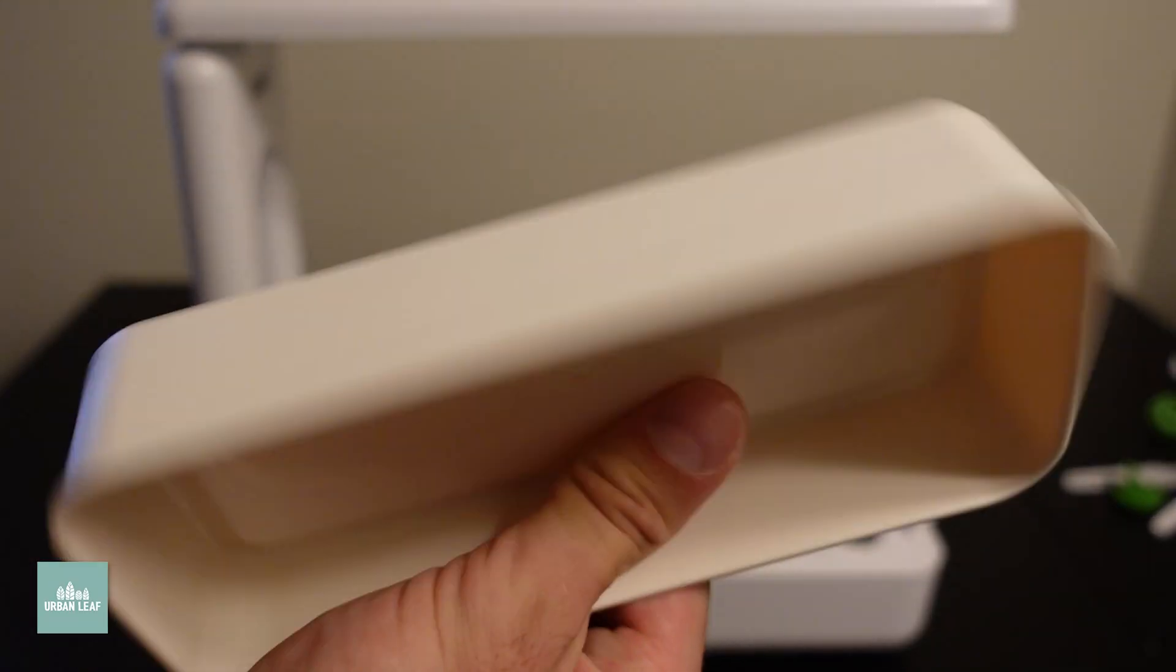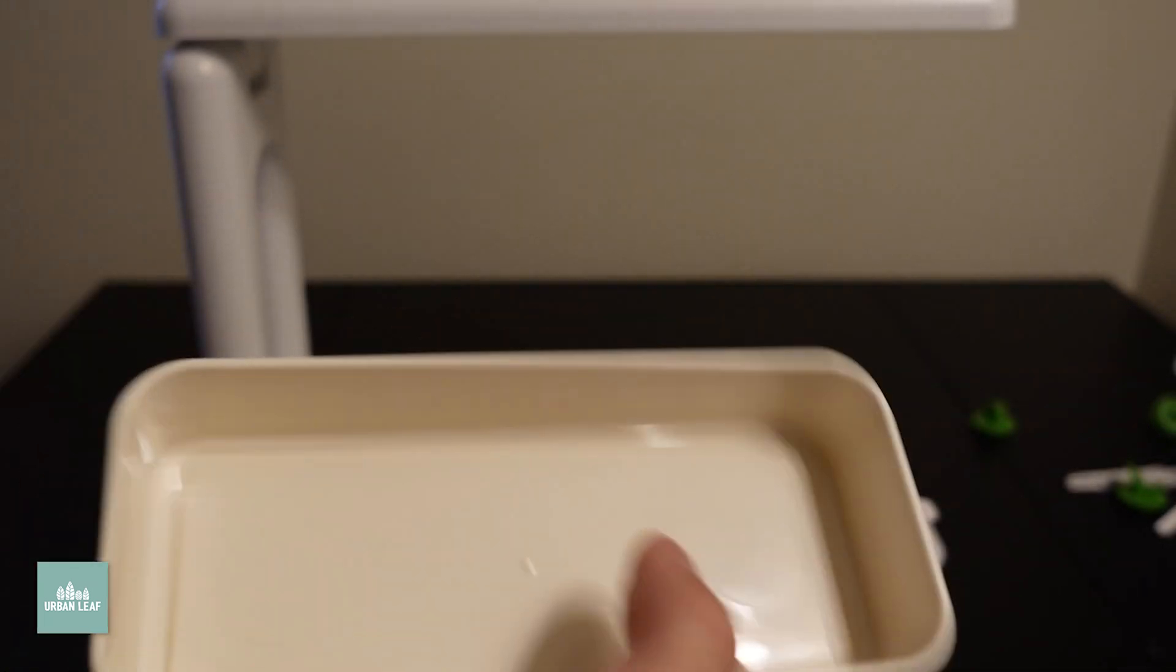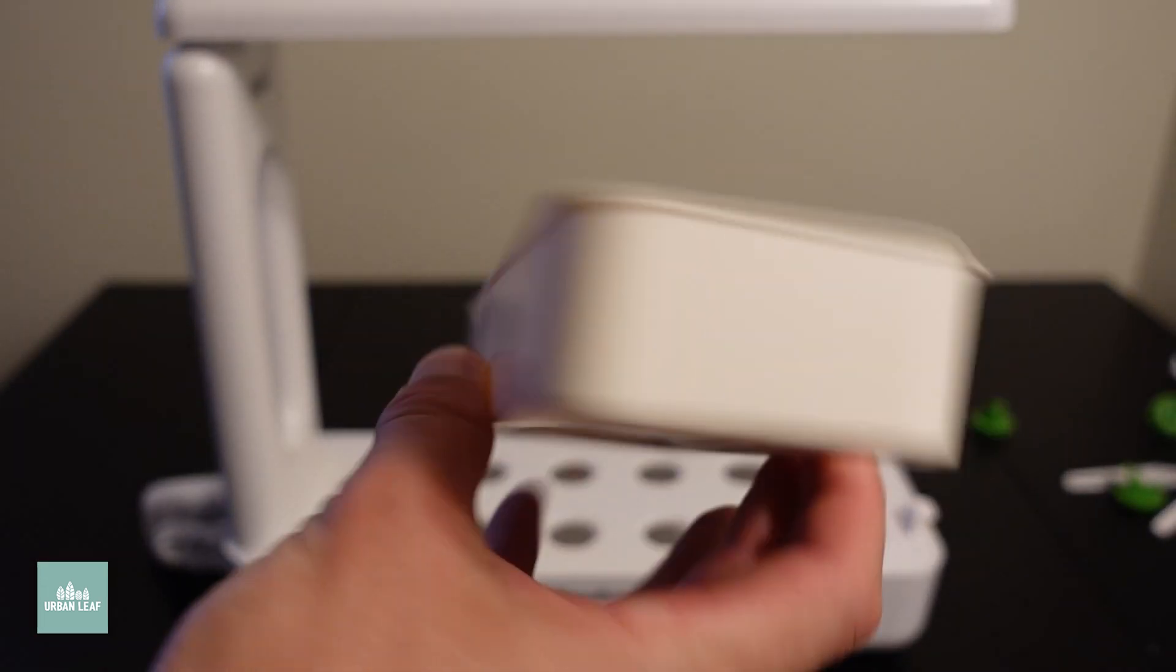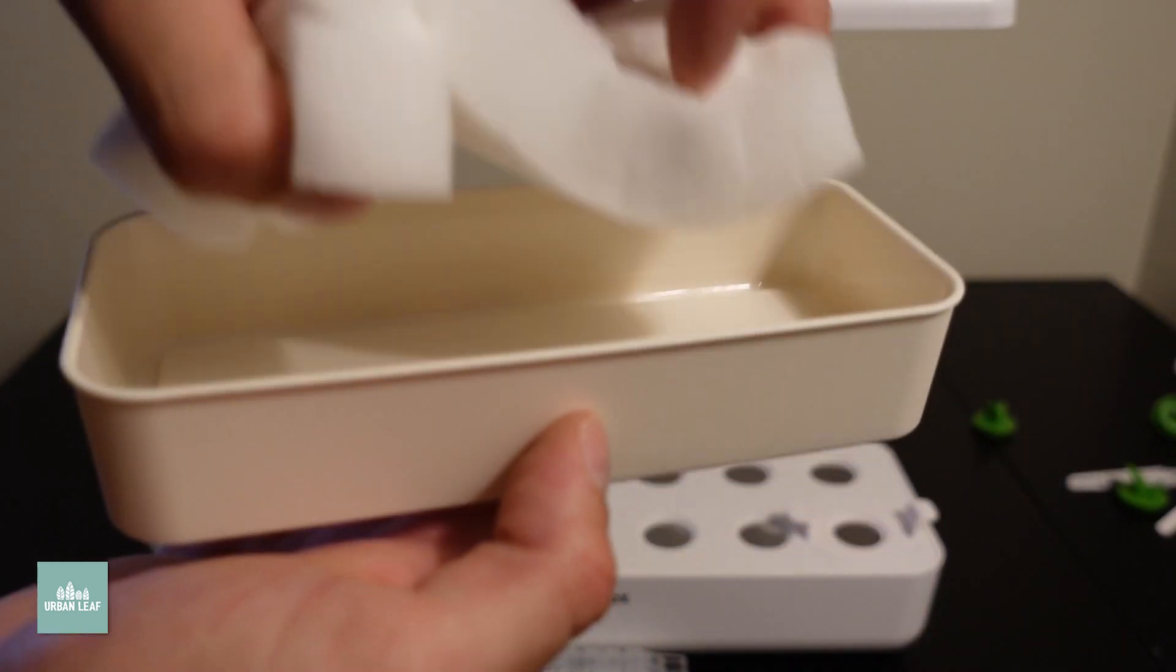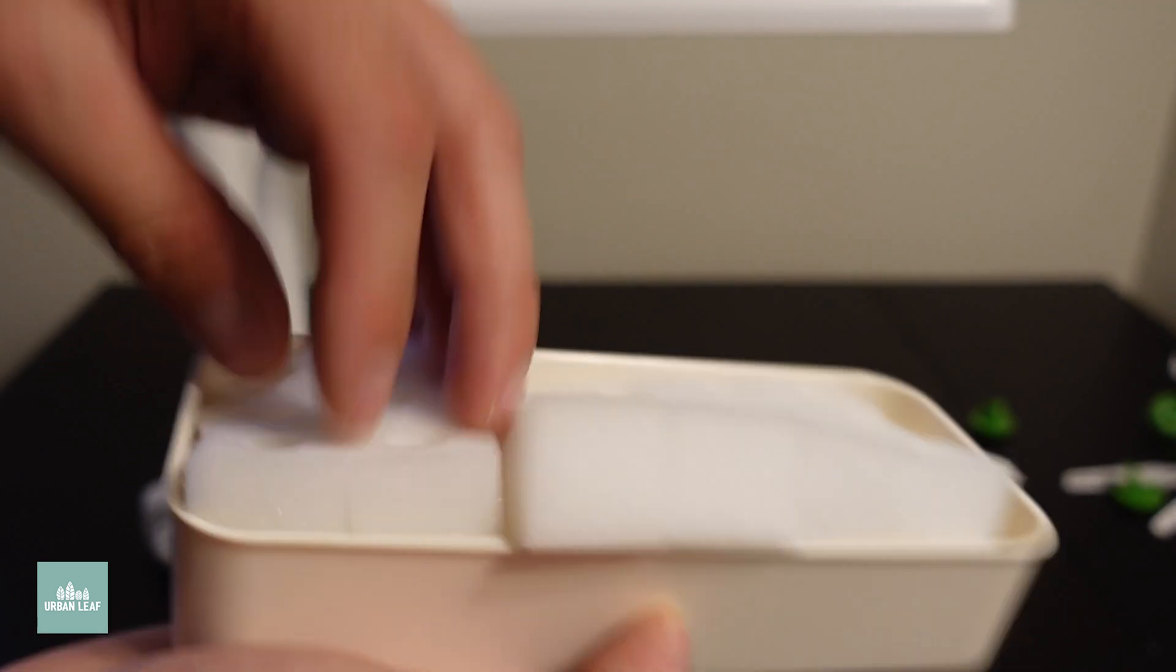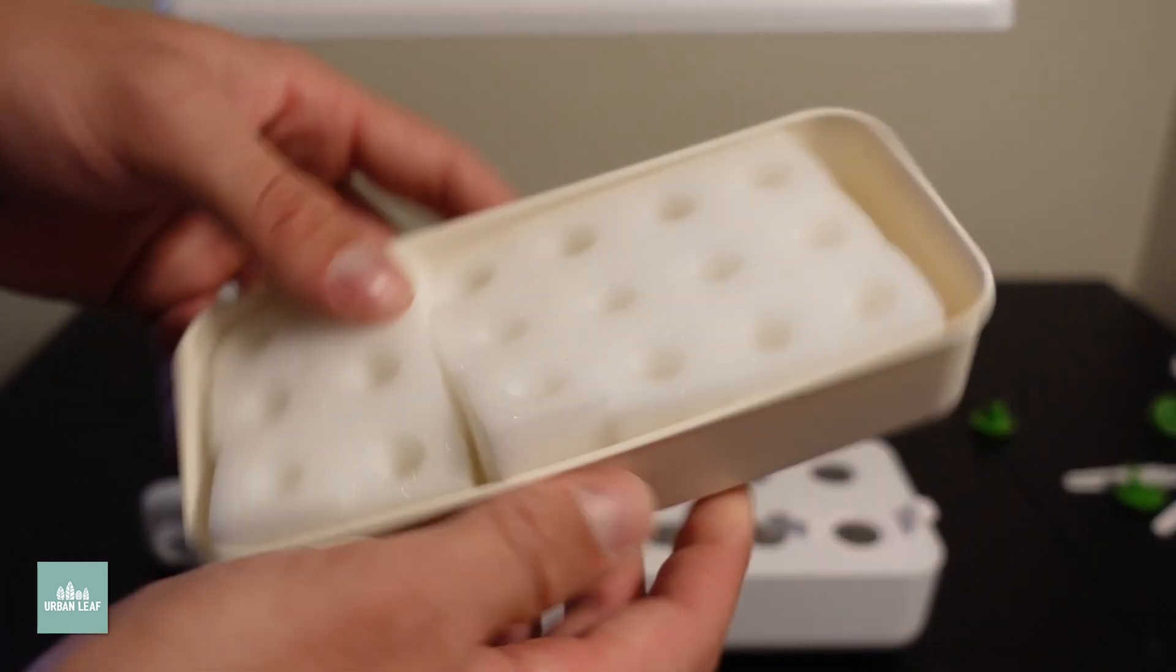This product comes with a germination tray, I guess you would call it. It doesn't have a dome, so that's a little questionable. The instructions tell you to fill with water and germinate your plants. You are germinating your plants within these grow cubes, these foam grow cubes.